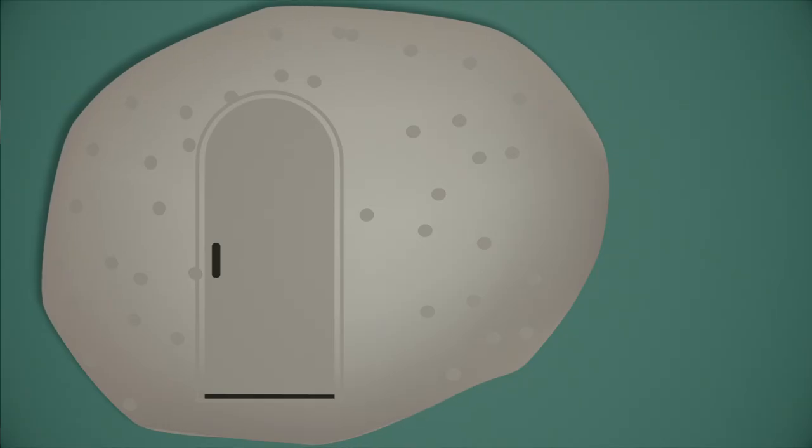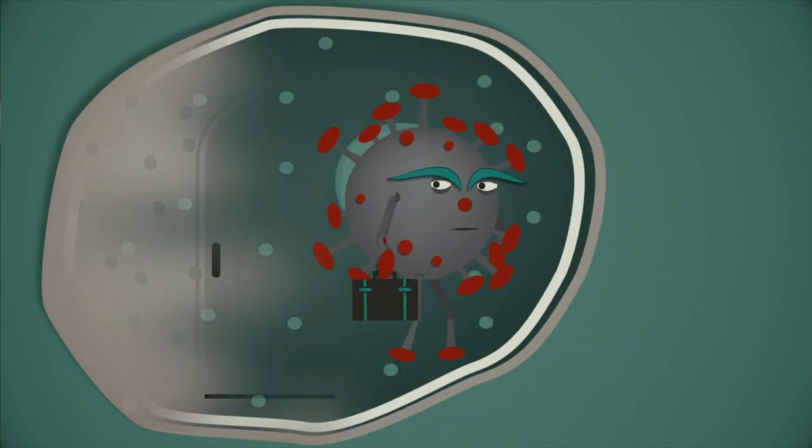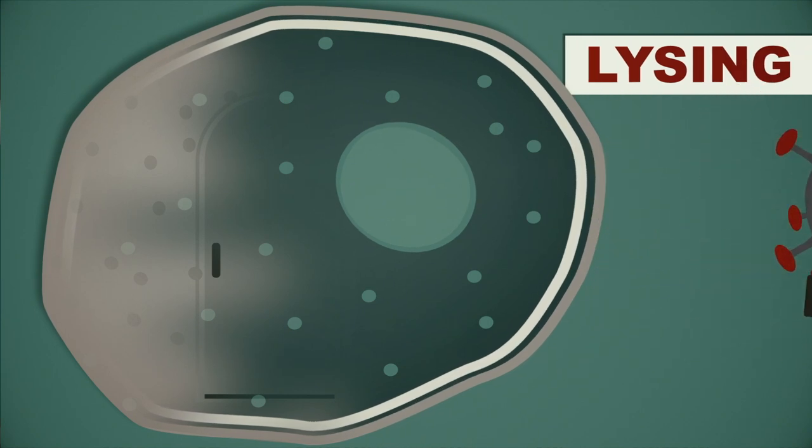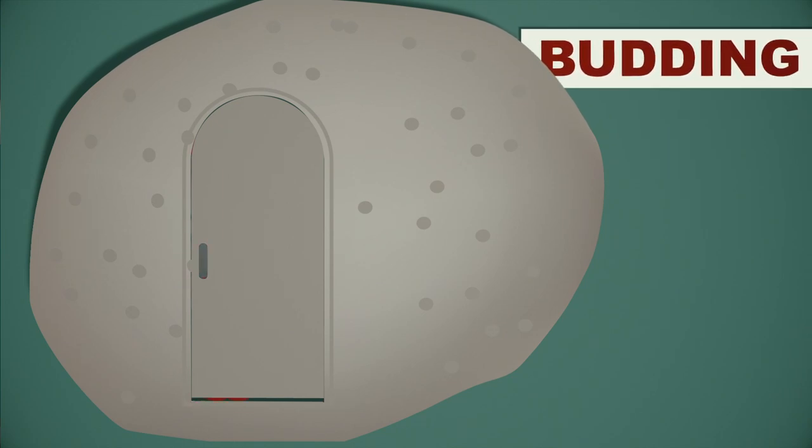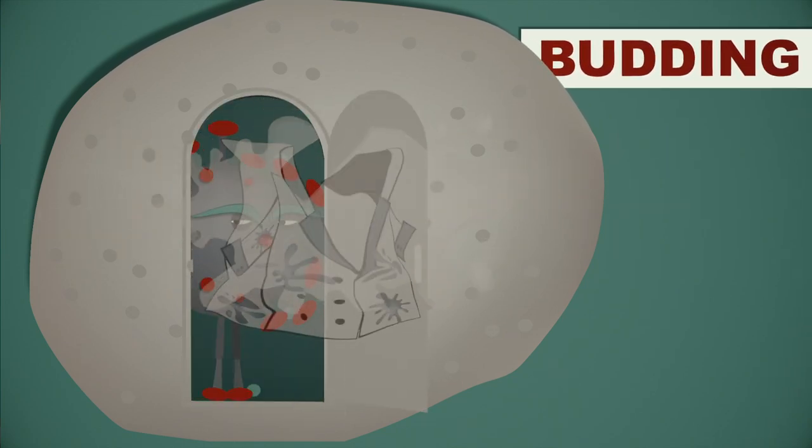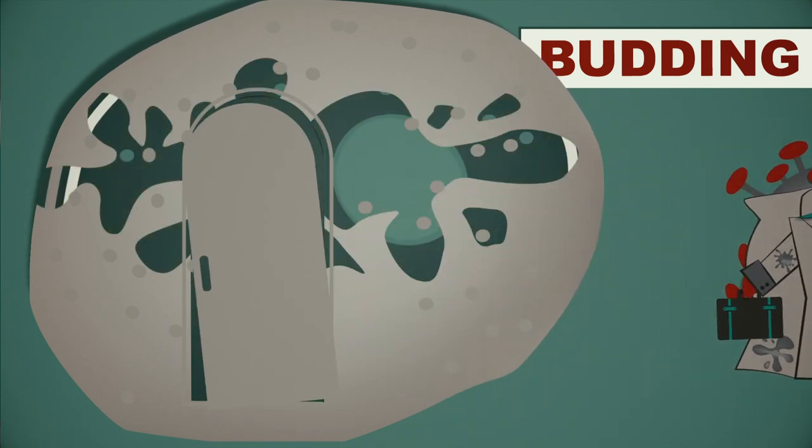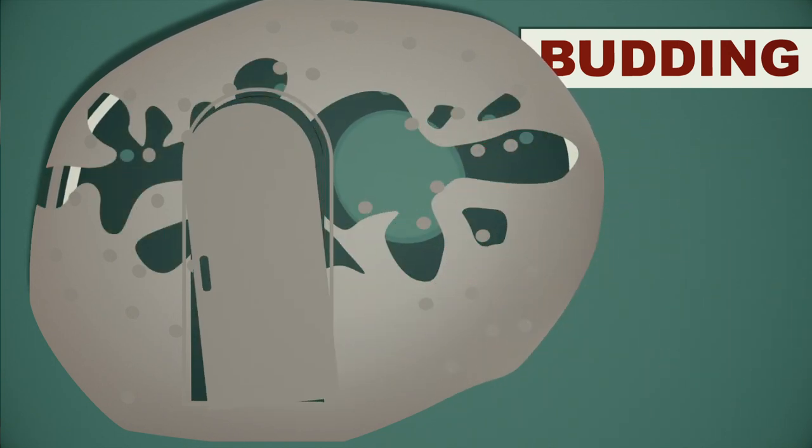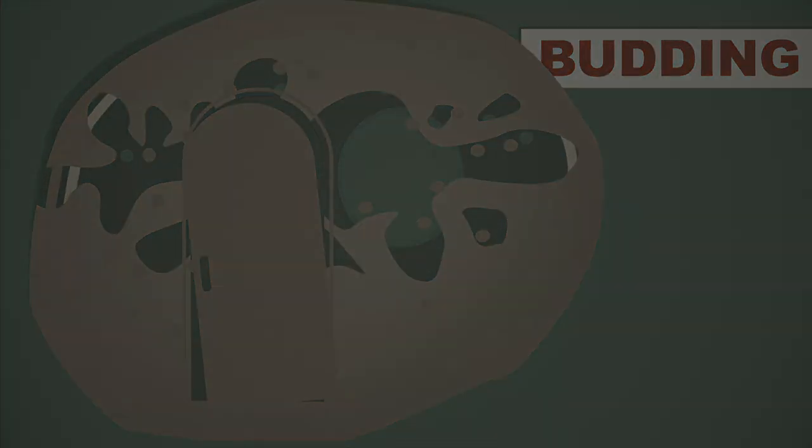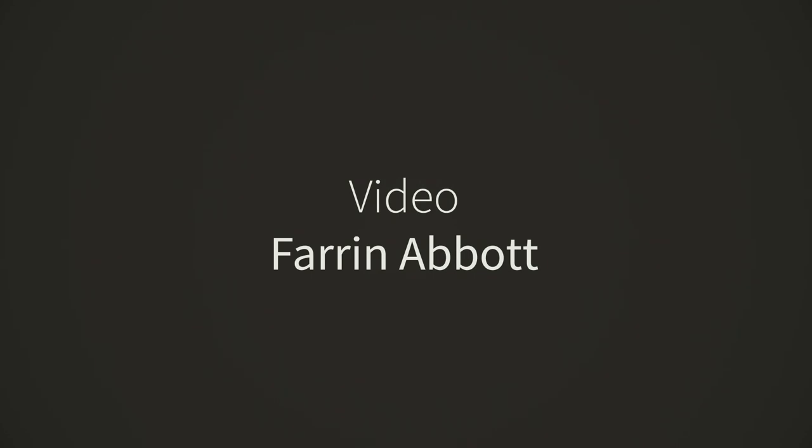Sometimes the escape is violent and involves the new viruses punching through the outer membrane of the host cell, a process known as lysing. But enveloped viruses can escape by an alternative method called budding, whereby they wrap themselves in a piece of membrane from the infected cell, and cloaked in these newly acquired greasy overcoats slip through the cell's outer membrane. Even then, the cell having birthed myriad baby viruses is often left fatally weakened.